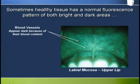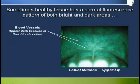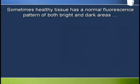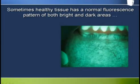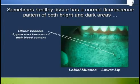This is the labial mucosa on the upper lip, the blood vessels again showing up dark under the scope. Here is labial mucosa this time on the lower lip, presenting similarly to the upper lip.